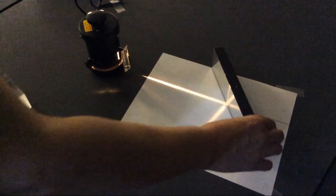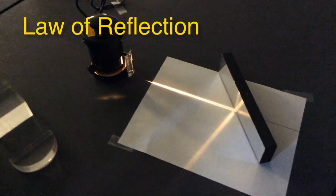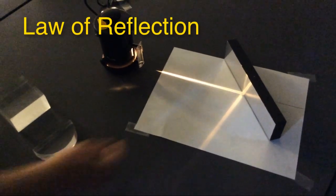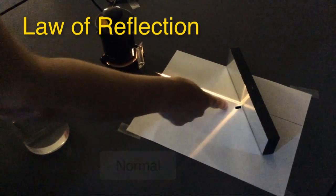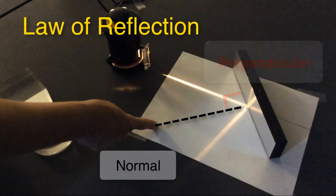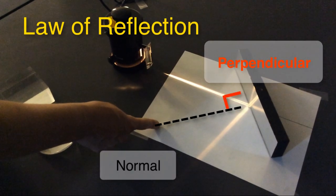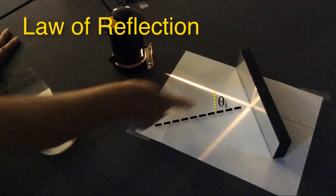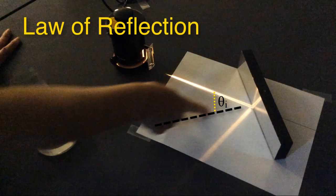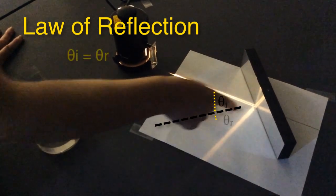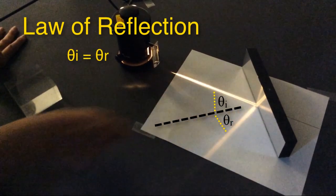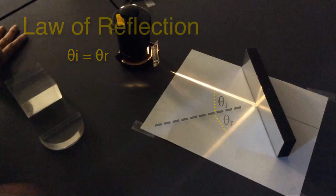And earlier, we discussed the law of reflection, which tells us that we always measure the angle from the normal to the mirror, from the line perpendicular to the surface of the mirror. The angle of incidence of light is always equal to the angle of reflection. That's called the law of reflection.